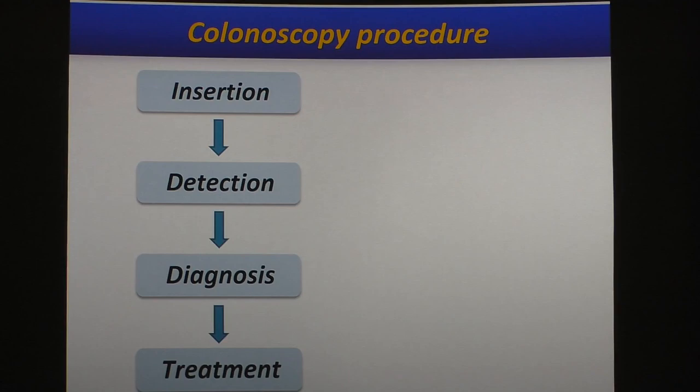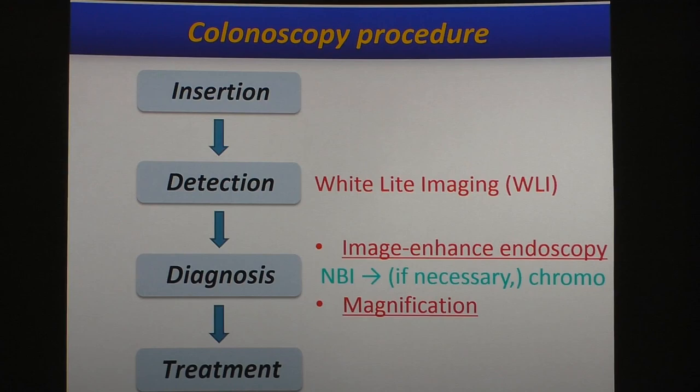Detection is performed in white light imaging, and diagnosis is performed first by white light imaging, then followed by image-enhanced endoscopy such as NBI. If necessary, chromoendoscopy can be performed. And if you have a colonoscope with magnification function, magnifying endoscopy is also helpful.